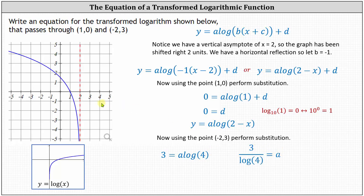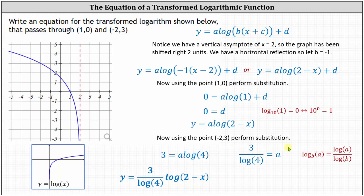One equation for the transformed logarithm is y equals three divided by common log four, times common log of the quantity two minus x. We can simplify this using the change of base formula in reverse. Using common logs, log base b of a equals common log a divided by common log b. Since our denominator is common log four, we can write this using log base four. The simplified equation is y equals three times log base four of the quantity two minus x.